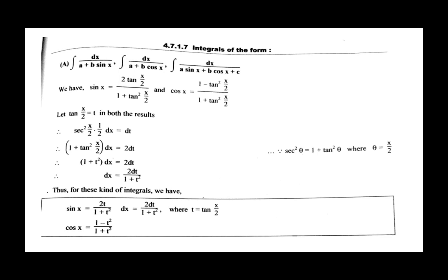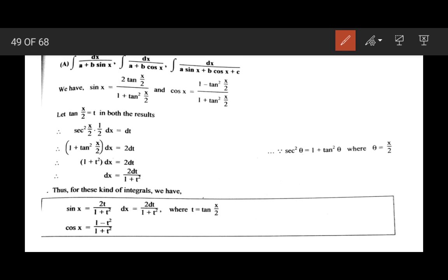Welcome to the next video on integration. In today's video we are going to see how to integrate when the integral is in the form of 1 upon a plus b sin x dx, or integral 1 upon a plus b cos x dx, or integral 1 upon a sin x plus b cos x plus c dx. That means the numerator is 1 and in the denominator we have either sin x or cos x or both.